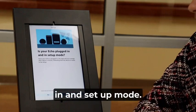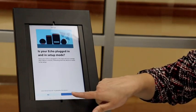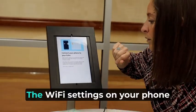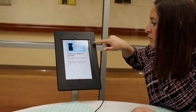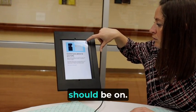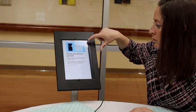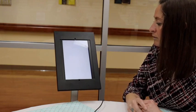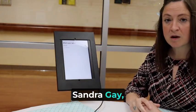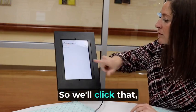It says the Echo plugged in and set up mode. Open the Wi-Fi settings on your phone. It should be on it. We set up the account. So we'll click that.